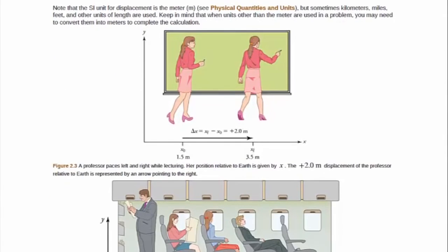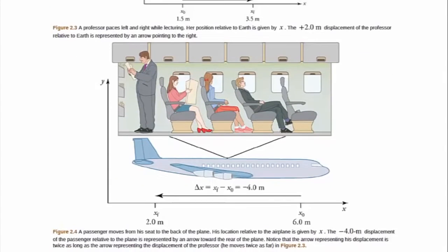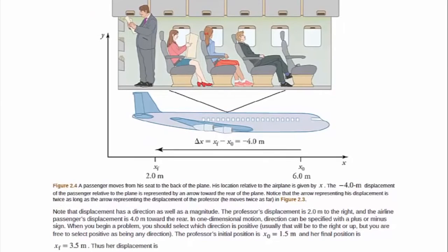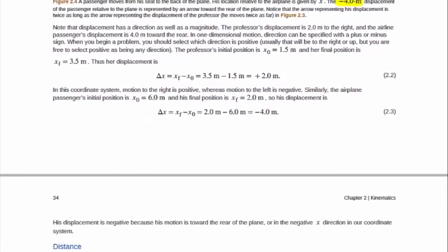Now moving on to page 33, you have some discussion on the units of displacement and position, and some discussion on how displacement can be negative. That's worth paying attention to.